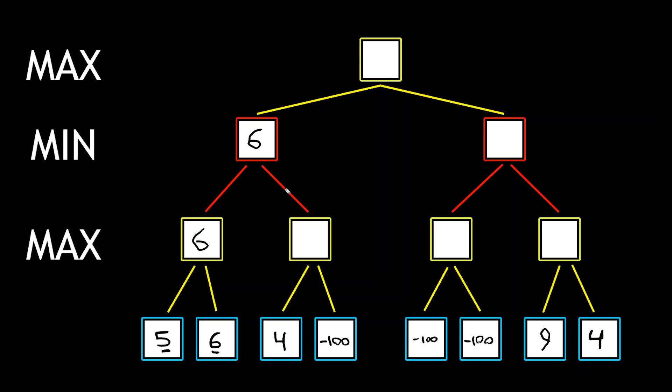So once we get to this right path, we are the maximizer player again, and we see I have the options of four and negative 100. So we first set the max to four, and then we see that negative 100 is not greater than four, so we keep our move at four.